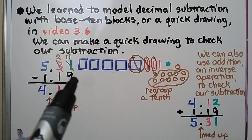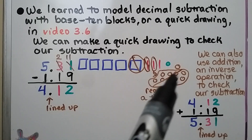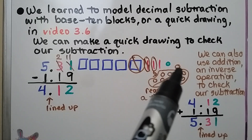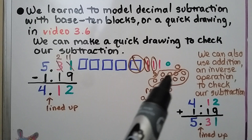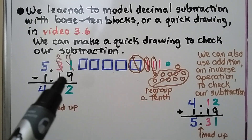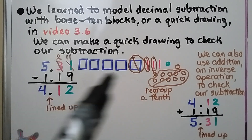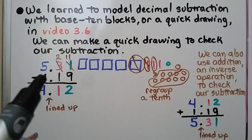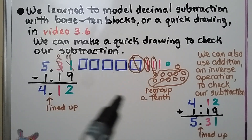We need to take away 9 of them, so we circle 9 and cross them out. That's going to leave that 1 little extra one here because we made 10 — we only crossed out 9. Now we need to get rid of a tenth, so we cross out a tenth. We need to get rid of 1 whole, so we cross out a square.